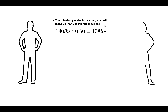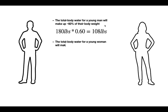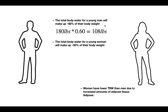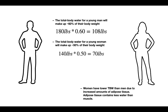For a female, things are a little different. Around 50% of her body weight will be water, and the reason for this has to do with adipose tissue. Women tend to have lower total body water contents than men due to increased amounts of adipose tissue, which contains less water than muscle does. So for a 140-pound woman, 70 pounds would be water weight.